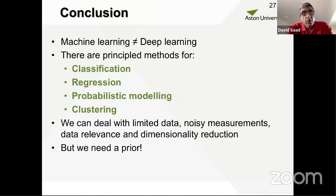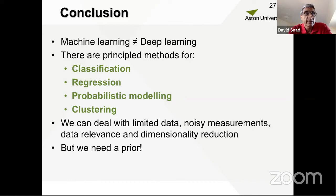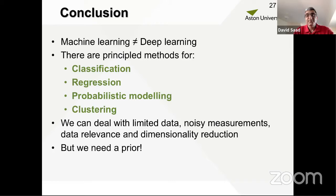In conclusion, machine learning is not deep learning. There are many other principled probabilistic methods for classification, regression, probabilistic modeling, and clustering. These methods can handle relatively limited amounts of data, noisy measurements, data relevance, and dimensionality reduction. But for all of that, we need some prior understanding of what we are looking for. Thank you for your attention.